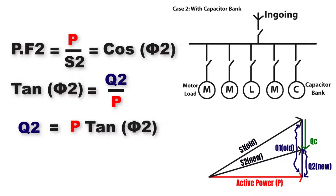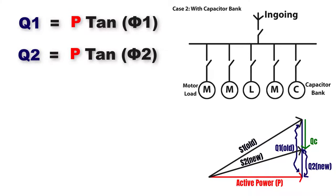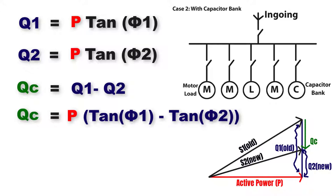If we subtract Q1 minus Q2 we get Qc, which is the required reactive power of the capacitors to improve the system. So Qc equals Q1 minus Q2, or P·tan(phi1) minus P·tan(phi2). Taking P as common: Qc equals P times (tan phi1 minus tan phi2).